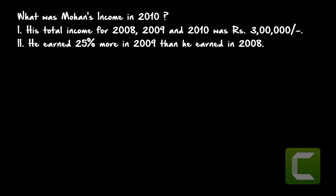The options are: if only statement one is sufficient to answer the question, give option A. If only statement two is sufficient, give option B. If both statements one and two are required, give option C. If either A or B is enough, give option D. If neither statement one nor statement two are sufficient, give option E.